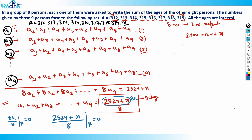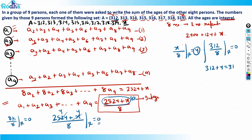Checking among the values in the set: 312 divided by 8 gives remainder 0. Adding 4 gives 316, and indeed 316 divided by 8 gives remainder 4. Therefore x = 316 is the repeated number.